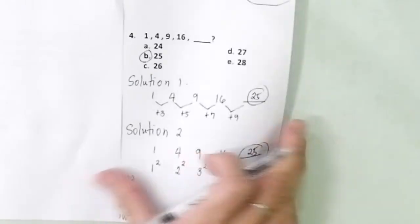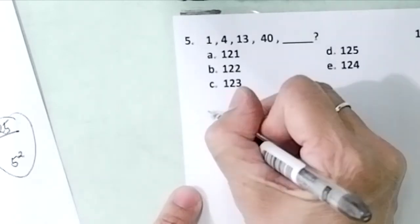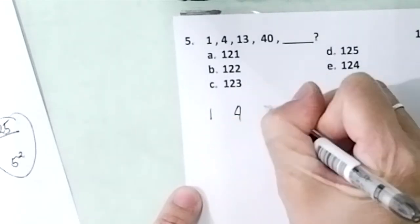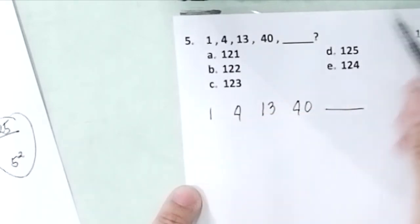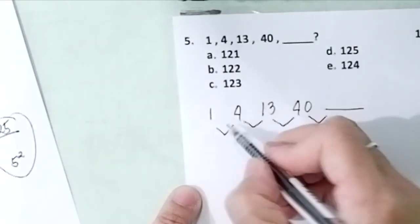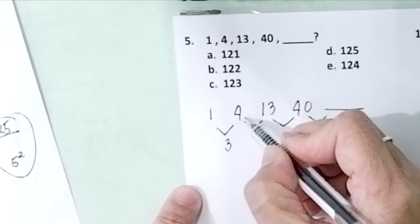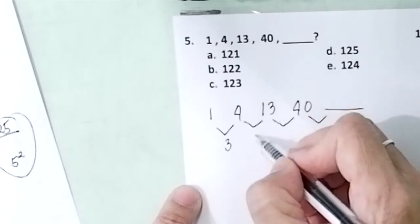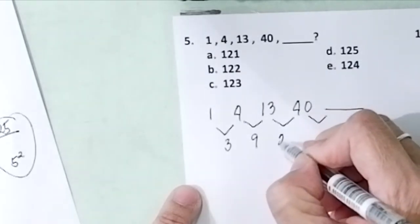Let's move on to the next problem. Problem number 5. Another pattern, number patterns. So we get 1, 4, 13, 40, blank. And the best way here is for you to get the differences. Get the differences. What do you add to 1 to get 4? 3. 4 plus blank gives you 13. Or 13 minus 4 is 9. 40 minus 13 is 27.